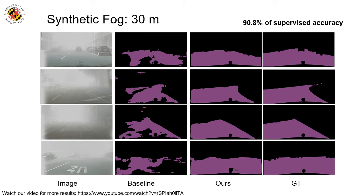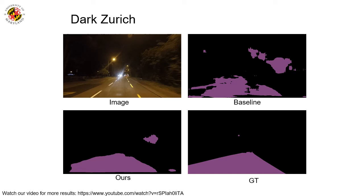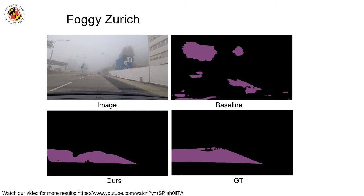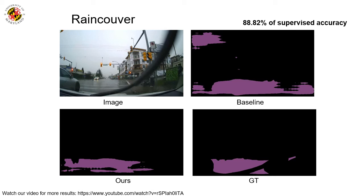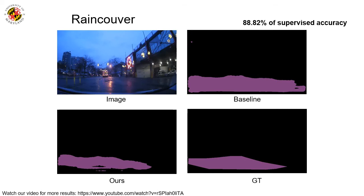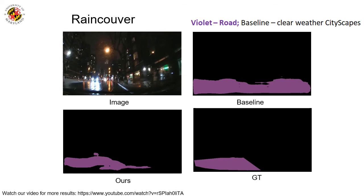Dark Zurich is a real dataset captured at night. We show that SSSFDA improves MIOU by 31.47 points. Similarly, on Foggy Zurich, another real-world dataset, we demonstrate that SSSFDA improves MIOU by 101 percent over the corresponding baseline. RainCouver is a real-world rain dataset captured in different lighting conditions. We present results on images captured during the day under rain, on a photo taken on a rainy evening, and finally on photos captured during the night under rain.